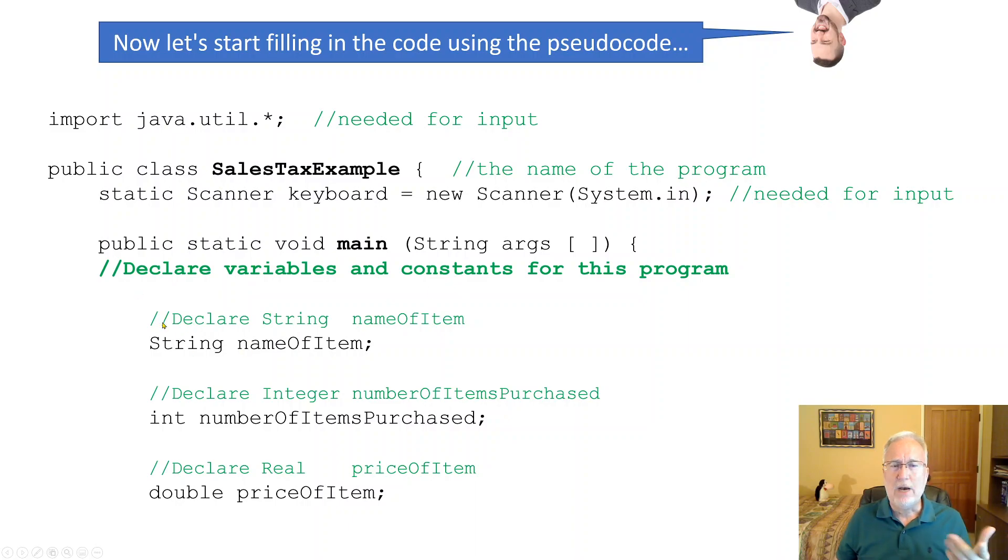So we're going to declare the variables. I just copied over the pseudocode. Declare string name of item. String name of item. There you go. In Java, you just don't say declare, but there it is. Same thing.